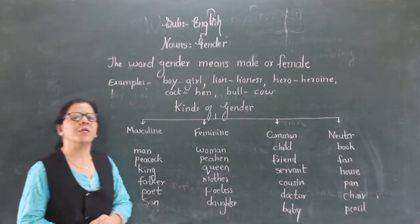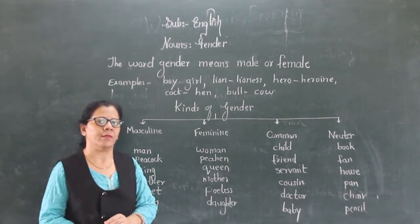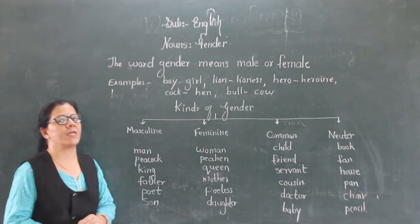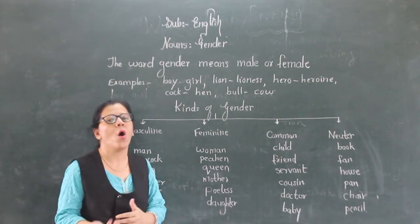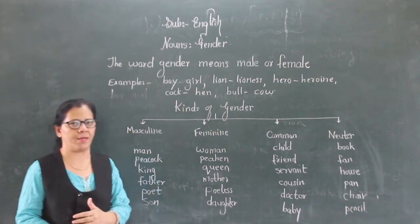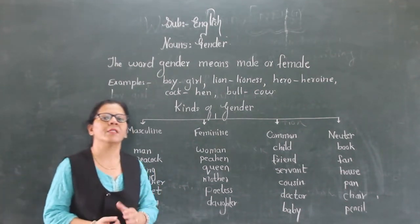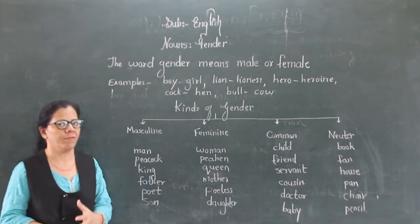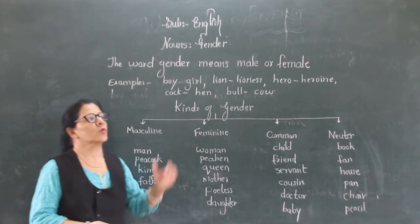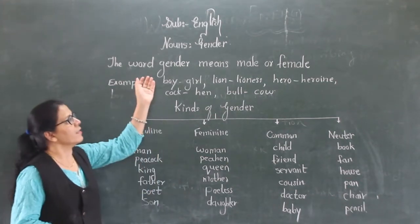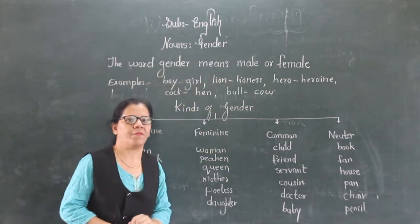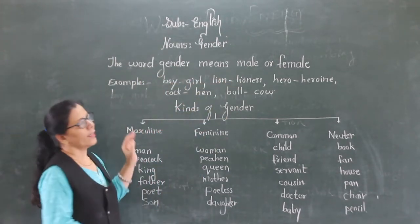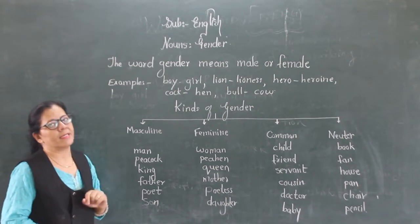Now what do you mean by gender? The word gender means male or female. Now you know all living things are either male or female. So the word gender means male or female. Now let us see some examples.